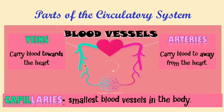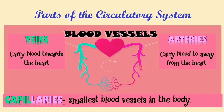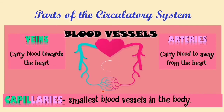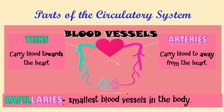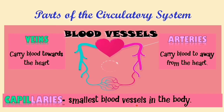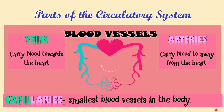The veins are responsible for carrying blood towards the heart, while the arteries are responsible for carrying blood away from the heart. The third type, the capillaries, are the smallest blood vessels in the body, connecting the smallest arteries to the smallest veins. These are the actual sites where gases and nutrients are exchanged.